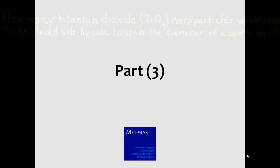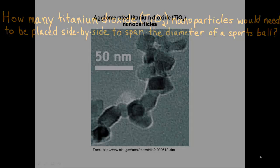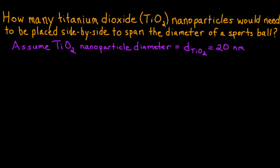The question for learners in Part 3 is: how many titanium dioxide nanoparticles would need to be placed side by side in order to span the diameter of a sports ball? This can be answered by determining how many orders of magnitude larger a sports ball is relative to the nanoparticles. This is an image of an agglomerate of individual titanium dioxide nanoparticles. TiO2 nanoparticles are used as whiteners in paints and cosmetics, for their ability to absorb ultraviolet radiation in sunscreens, and for their antimicrobial properties in a variety of products. The primary individual particles in the image have dimensions on the order of 20 to 25 nanometers. We will refer to this dimension as a diameter, even though most of the individual nanoparticles are not spheres. We will assume that titanium dioxide nanoparticles have a diameter of 20 nanometers.